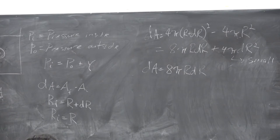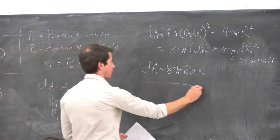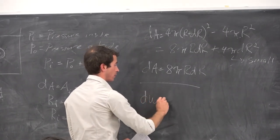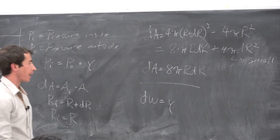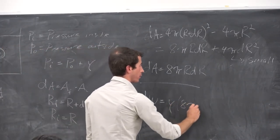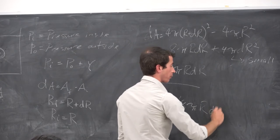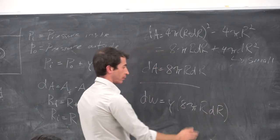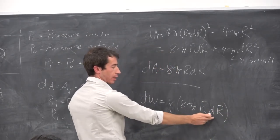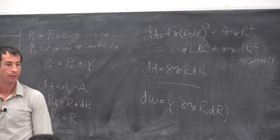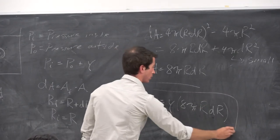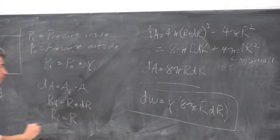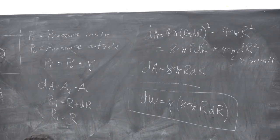So our change in work for a given material surface is going to be a function of the surface tension of that material, the original radius, and the change in that radius — dW = γ · 8πr·dr. That's an important result.